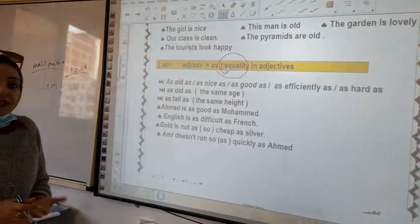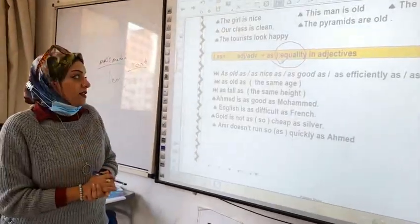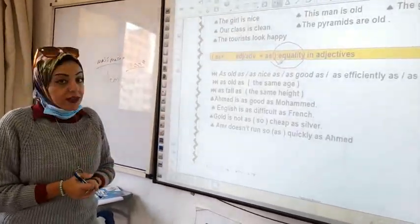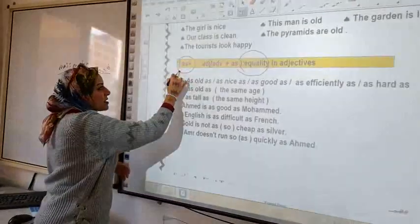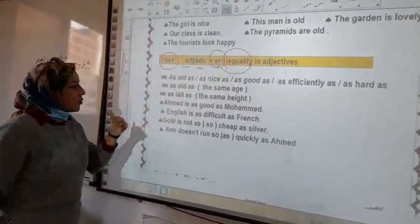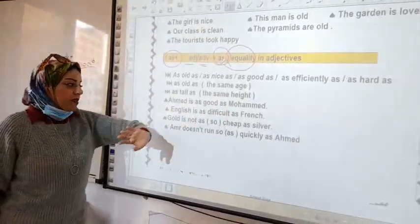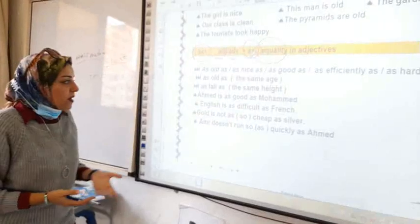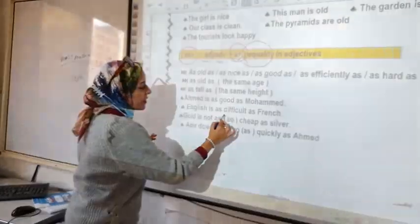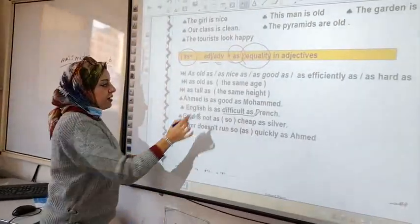Equality means or similarities that no real comparison is here. How can we express equality or similarity by using as adjective or adverb as? Look at the words here. When I say that Ahmed is as good as Muhammad, it means that there is no comparison between them. English is as difficult as French.